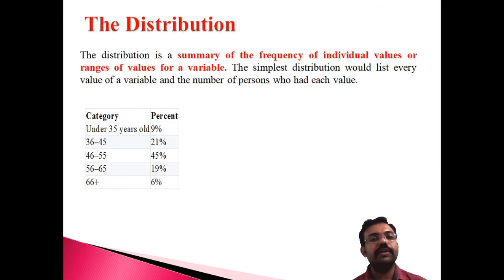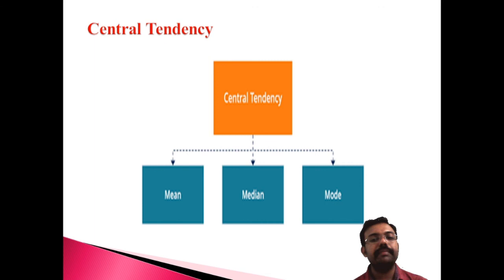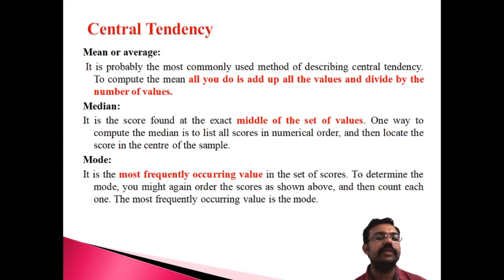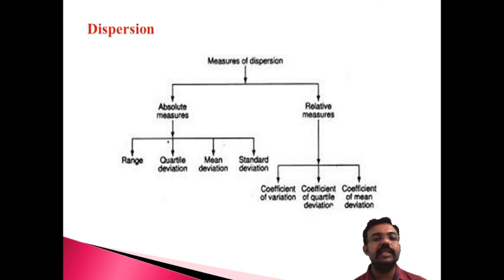At the distribution level, we have continuous and discrete frequency distribution. For central tendency: mean is the average, median is the middlemost item, and mode is the most frequently repeated item. For dispersion: absolute measures include range, quartile deviation, mean deviation, and standard deviation; relative measures include coefficient of variation, coefficient of quartile deviation, and coefficient of mean deviation.